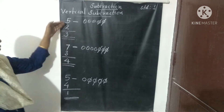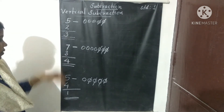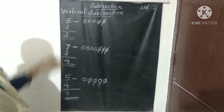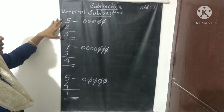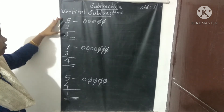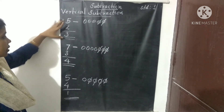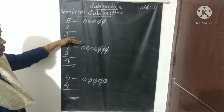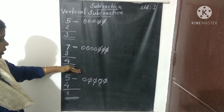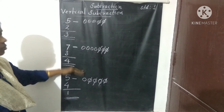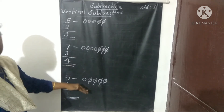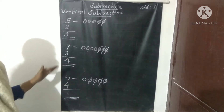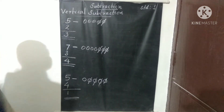If you understood these 3 questions, let's write them neatly in your notebook. First write this, then give 2 columns, then write the next, leave 2 columns, then write again. Write very neatly in your notebook.